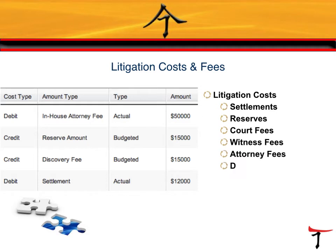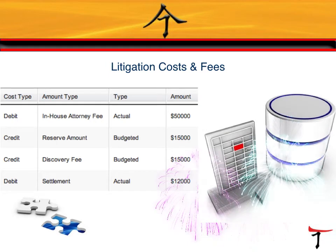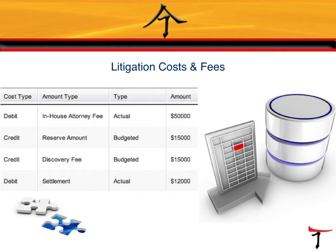Litigation case costs and fees may also be tracked such as reserve amounts, settlement costs, court fees, witness fees, attorney fees, discovery fees, and budget versus actual costs to see if the case is staying on track with budgeted amounts. Litigation costs can interface with accounting systems as well for information to pass to or from an accounting ERP.